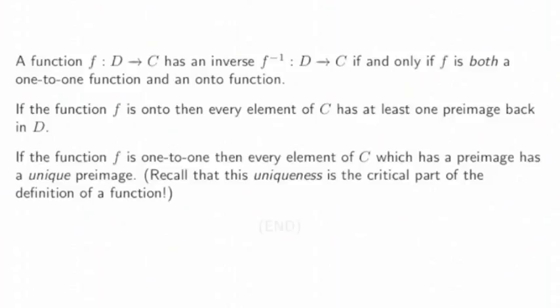So a very important concept in mathematics: a function f from D to C has an inverse function from C to D if and only if f has two properties. It's one-to-one and onto.